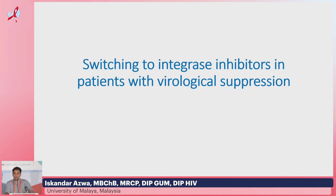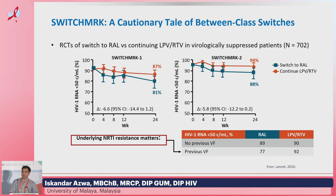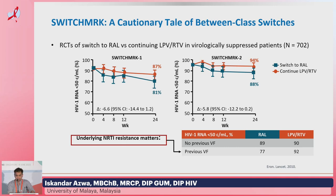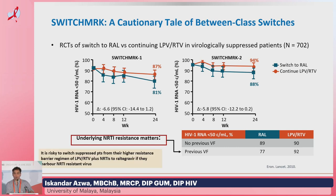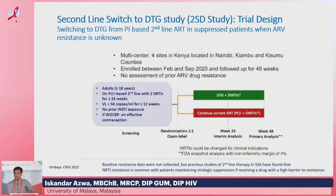Switching from PI-based second-line ART to integrase inhibitors in the setting of virological suppression — a lot of us have been very cautious about treatment switches. This was largely due to the earliest SWITCH-MARK study, which showed that if you switched from a drug with a higher genetic barrier to resistance to a lower genetic barrier drug, there were concerns about virological failure in the setting of NRTI resistance. It was considered risky to switch suppressed patients from Kaletra or lopinavir/ritonavir plus NRTIs to dolutegravir if they harbored NRTI-resistant virus.